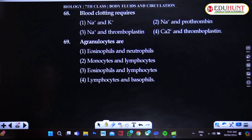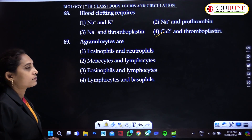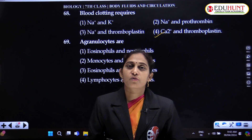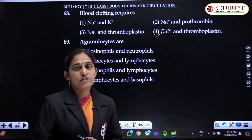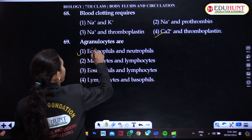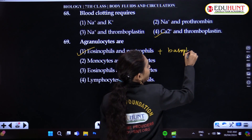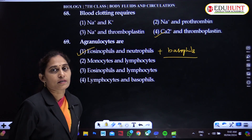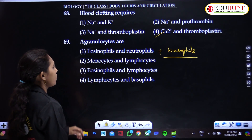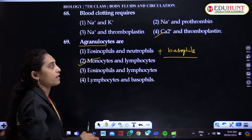Blood clotting requires calcium and thromboplastin. Agranulocytes — WBCs are of two types: agranulocytes and granulocytes. Granulocytes are eosinophils, basophils, and neutrophils. Agranulocytes are monocytes and lymphocytes — granules are absent in agranulocytes and the nucleus is not multi-lobed. The correct option is monocytes and lymphocytes.